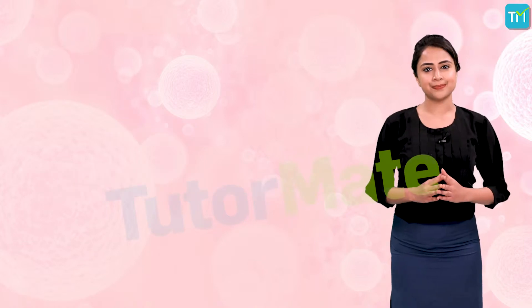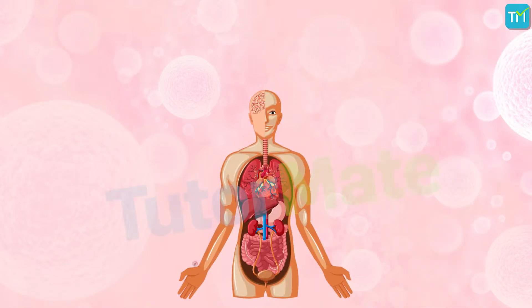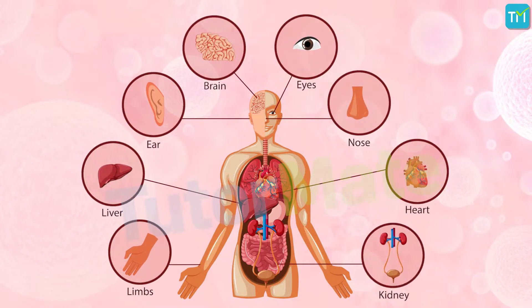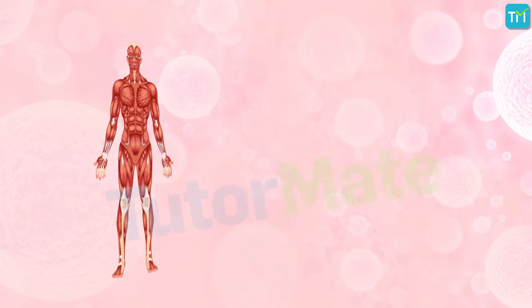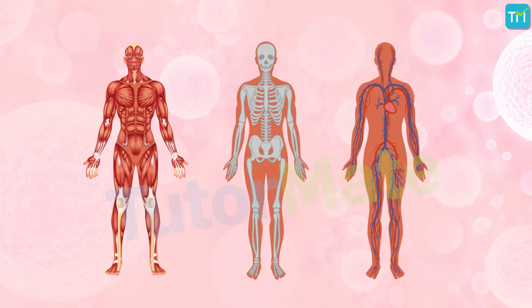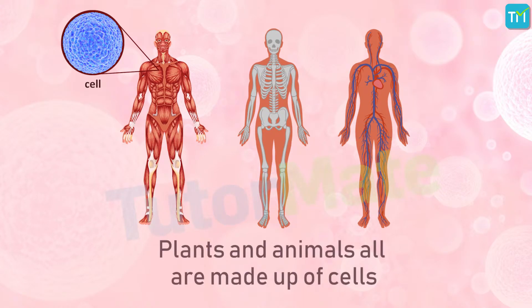A living organism has several body parts and organs such as limbs, eyes, nose, ears, heart, brain, liver, kidneys, etc. All these parts are made up of tissues such as muscles, bones, and blood, which are in turn made up of smaller units called cells. Plants and animals are all made up of cells.